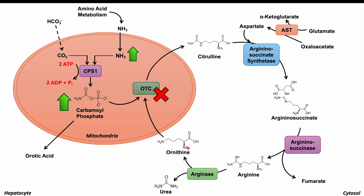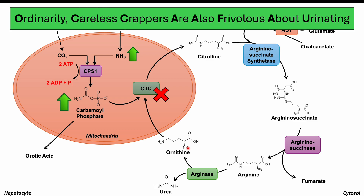If remembering the urea cycle steps is difficult, use this mnemonic: 'Ordinarily, careless crappers are also frivolous about urinating.' This helps remember the ordering of intermediates: Ordinarily = ornithine, careless = carbamoyl phosphate, crappers = citrulline, are = aspartate, also = argininosuccinate, frivolous = fumarate, about = arginine, urinating = urea.